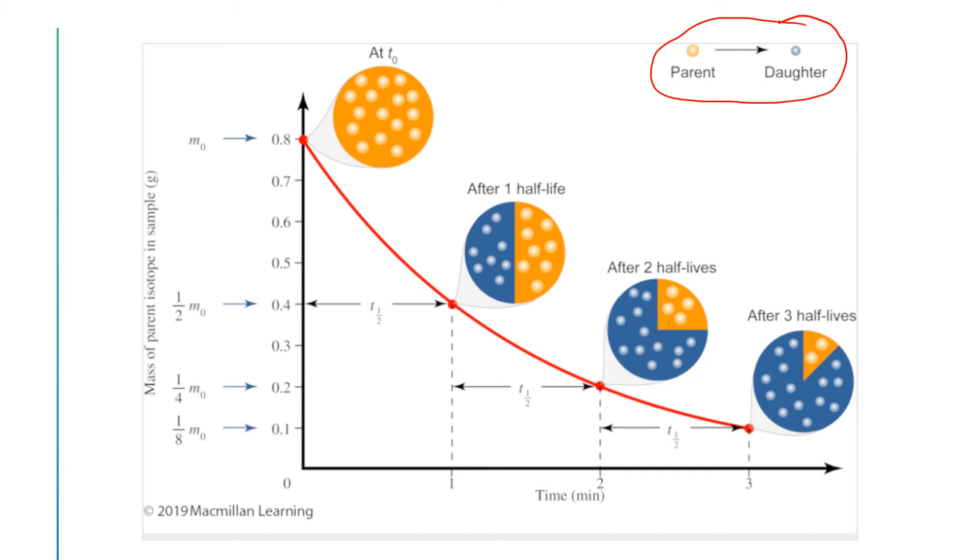And so when we're starting off at time zero, we have all parent nuclei. And then after one half-life has elapsed, half of those parent nuclei have turned into daughter nuclei.